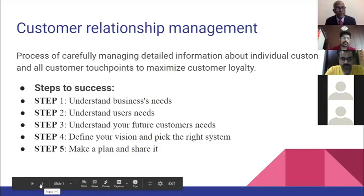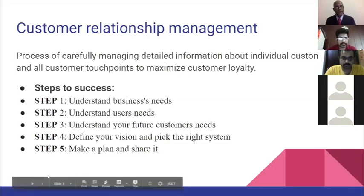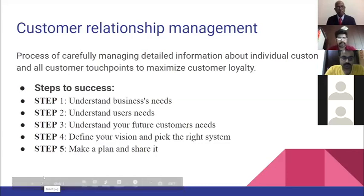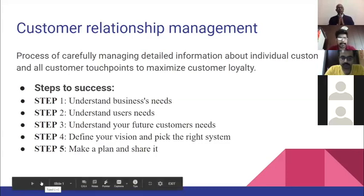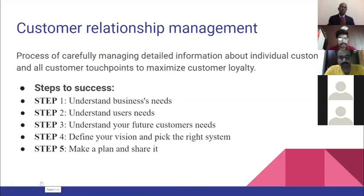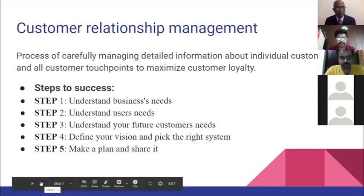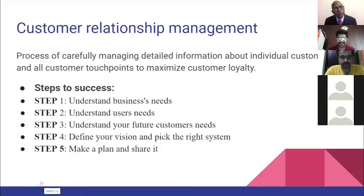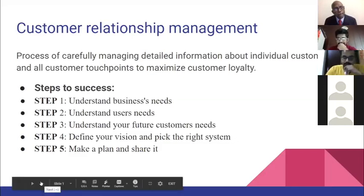The fourth step is to identify the right system — channeling all the future needs of customers and maintaining a balance between the products you've been producing so that both demand and supply are met. The fifth step is to make a plan on how to execute both the understanding of customer needs and the products being produced by your firm.